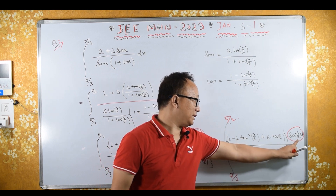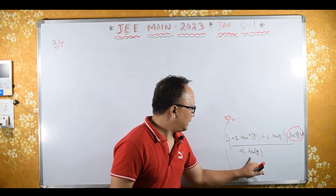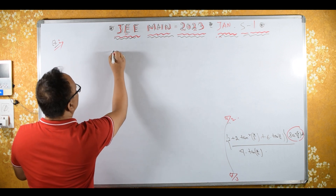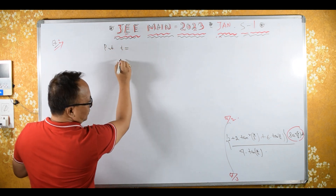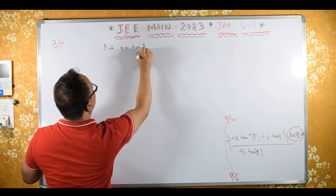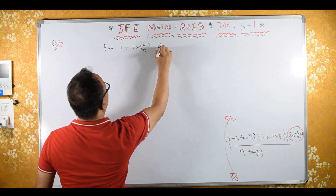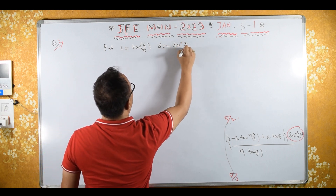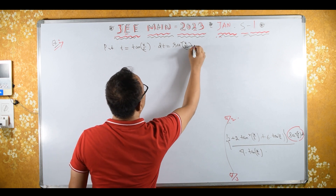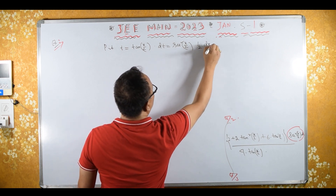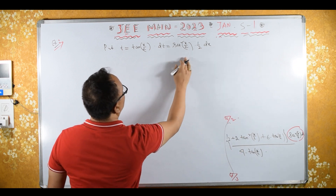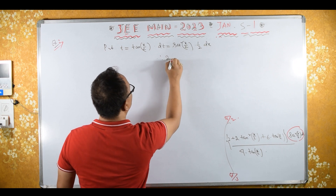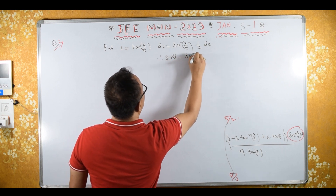Now we substitute t = tan(x/2). Therefore dt equals the differentiation of tan(x/2), which is sec²(x/2) times d/dx of x/2, and x/2 gives half into dx. Therefore 2 dt equals sec²(x/2) dx.